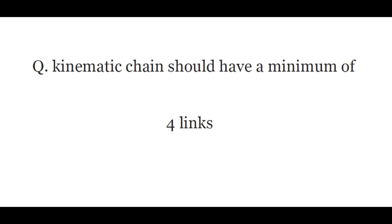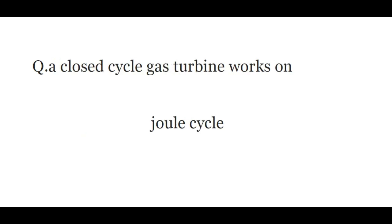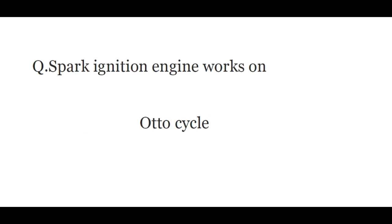Kinematic chain should have a minimum of four links. Octane number of isoctane is one hundred. A closed cycle gas turbine works on joule cycle. Spark ignition engine works on otto cycle.